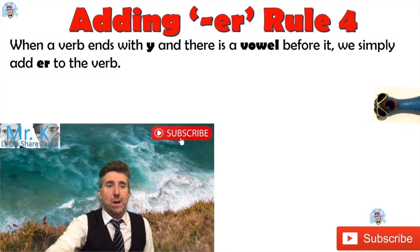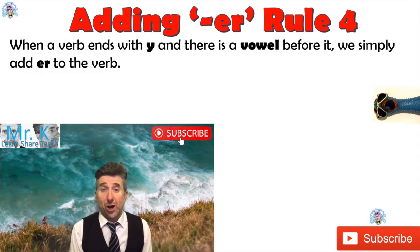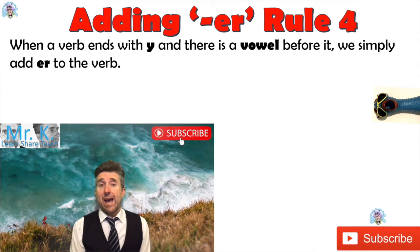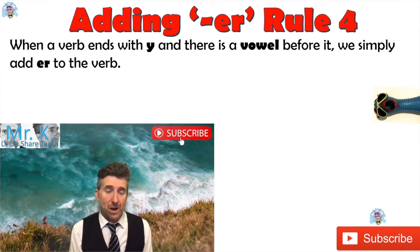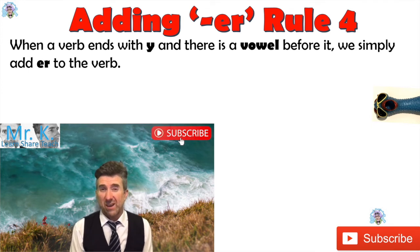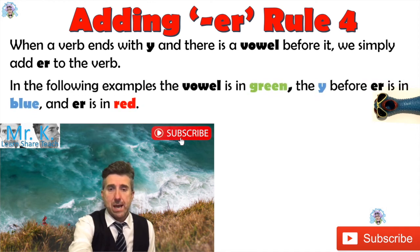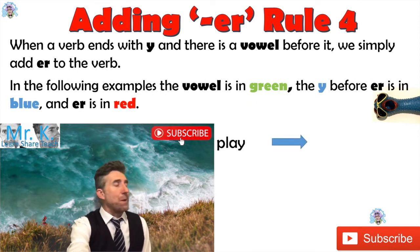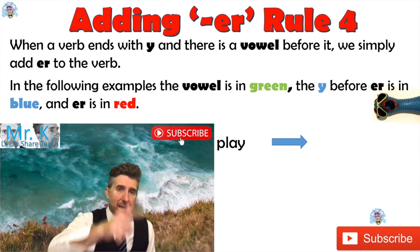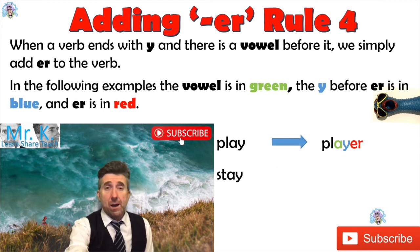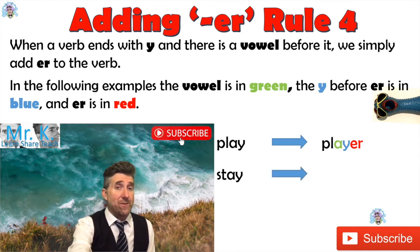On to rule number four: when a verb, word, or adjective ends with a Y and there is a vowel before it, we simply add ER. One reason for this is that in English, we treat Y sometimes like a vowel, so it's sort of like vowel-vowel at the end — in that case we just add ER. Example one: 'play.' Last letter is Y, the letter before Y is a vowel, so we just add ER to make the word 'player.' Here's another example: 'stay.' That one has a Y at the end and the letter before it is a vowel, so we just add ER — 'stayer.'